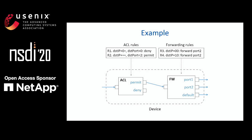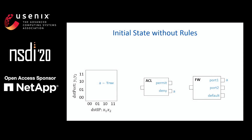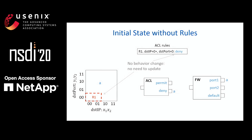We use a simple example to show how these three operations work. The device has an ACL element and a forwarding element. The forwarding element matches the destination IP address, and the ACL element matches the destination IP address and the destination port. Each field has only two bits. Initially, when there are no rules, we have a single predicate A — the true predicate representing all packets in the network. The default action of ACL is deny and the default output port is port 1, so predicate A appears at the deny port of ACL and port 1 of the forwarding element. Now, assume an ACL rule R1 is inserted, whose match fields intersect with predicate A. In this case, we will not split or create a new predicate, because there are no changes of forwarding behavior for any packets.